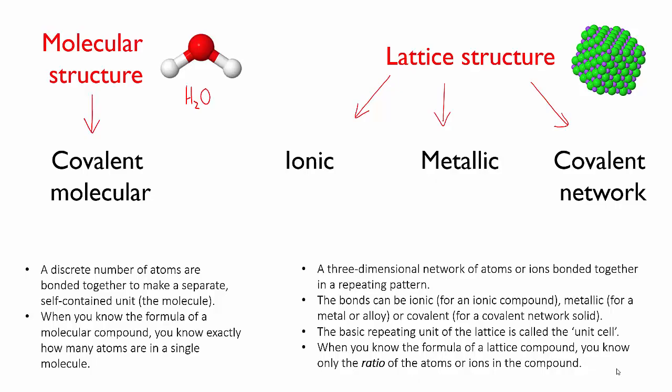So the point of all this is to distinguish between compounds that are formed of individual molecules and compounds that form lattices. With ionic or metallic substances, you know already that they form lattices. So that's easy. With covalent compounds, it's a bit trickier. They could be either.